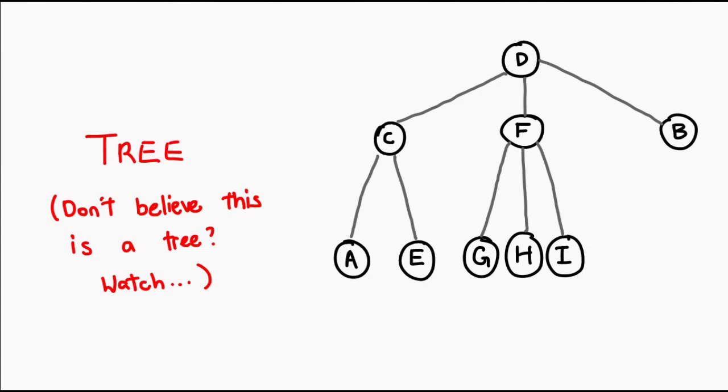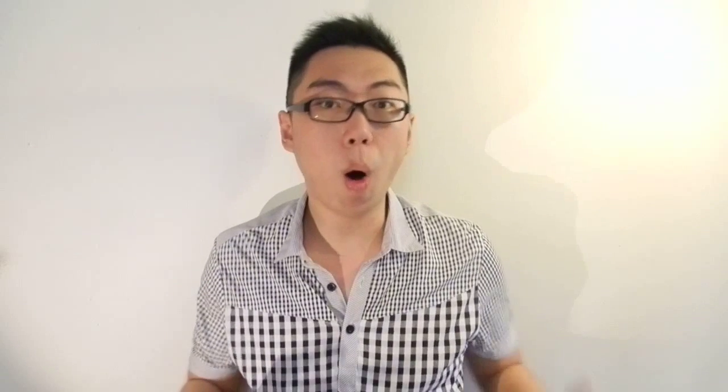A tree is restricted in a particular manner where all the nodes are connected from the top down. A graph isn't limited in this manner because you can have any connection, but if we say we want this graph to be a tree, then we cannot have certain connections. If you've been watching this channel, you'll know there are a lot of things we can do with trees, like sorting, rotations, and balancing. Ask me in the comments below and I'll link you to those videos.